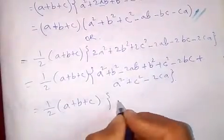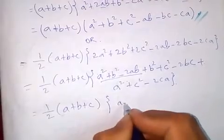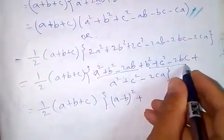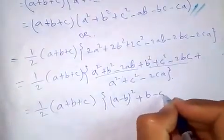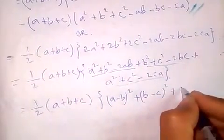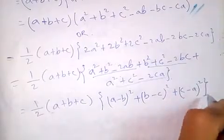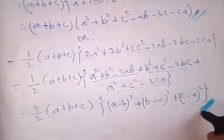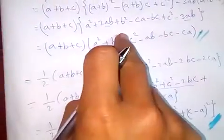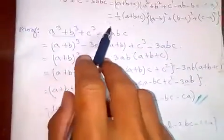This gives: half of (a + b + c) times [(a - b)² + (b - c)² + (c - a)²], which completes the proof. Both sides are equal.